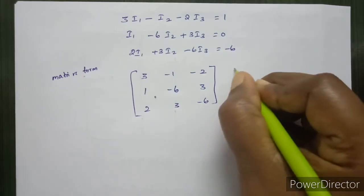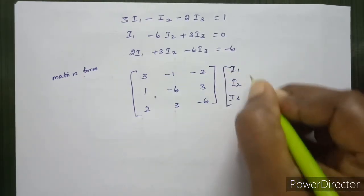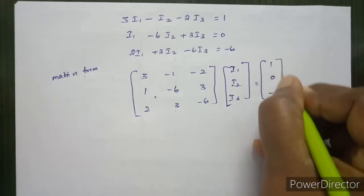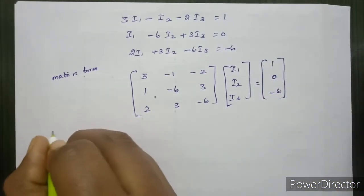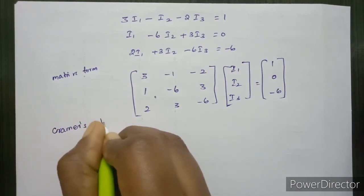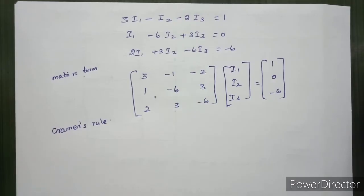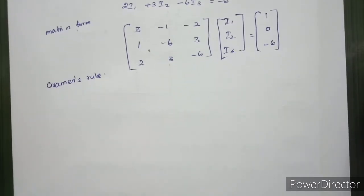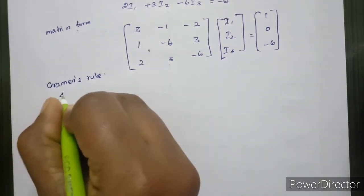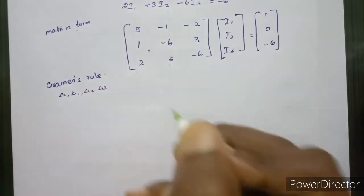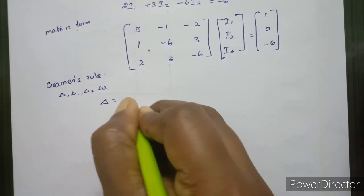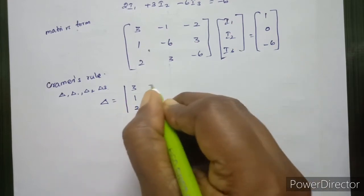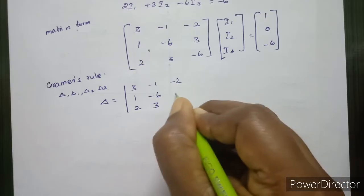We now have 3 variables: I1, I2, I3, with constants [1, 0, -6]. We will apply Cramer's rule. The Cramer's rule uses delta, delta1, delta2, and delta3 to solve for the 3 variables. First, we find delta, which is the determinant of the coefficient matrix: [3, -1, -2 / 1, -6, 3 / -2, 3, -6].